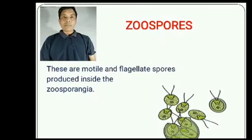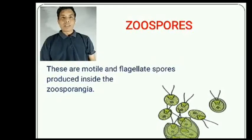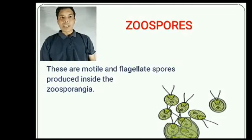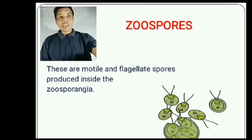There are many types of spores. Let us see two types here: zoospores and conidia. Zoospores are motile and flagellated spores produced inside a sac-like structure called a zoosporangium.